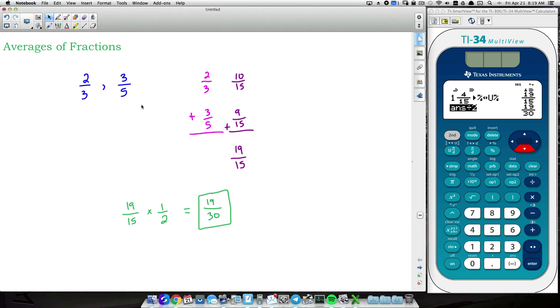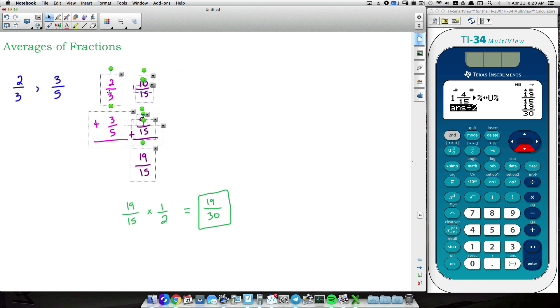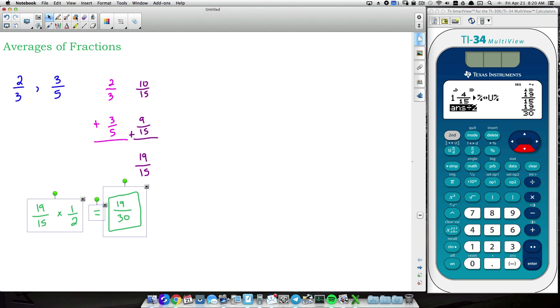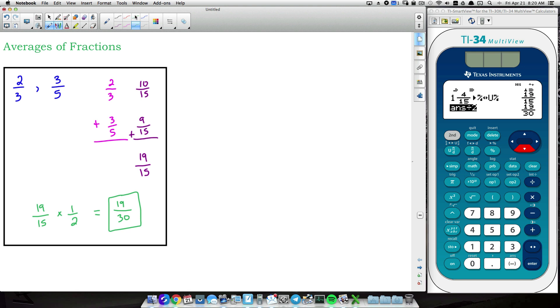So that's how you find the average of two fractions. Let's do an example where we find the average of, say, three fractions. All right? So I'm just going to slide this stuff over. That's example 1 and let's do three fractions.